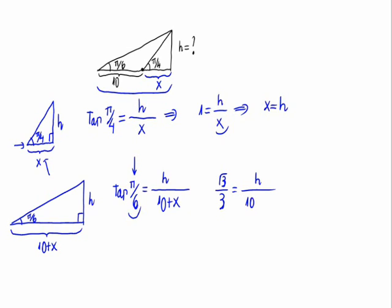So, its tangent is the square root of 3 divided by 3. This will be h divided by 10 plus x. The 10 plus x goes to the side multiplying, and the same with the 3, so square root of 3 times 10 plus x equals 3 times h.